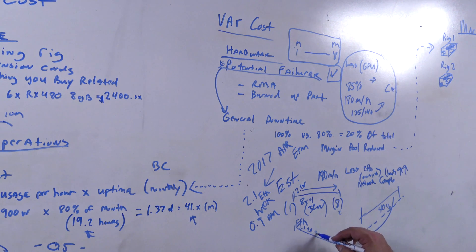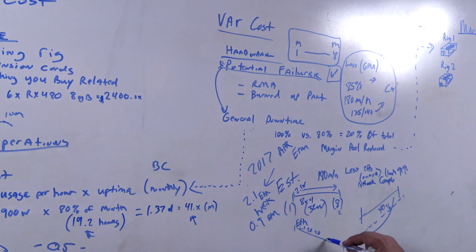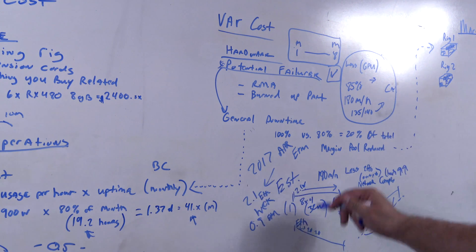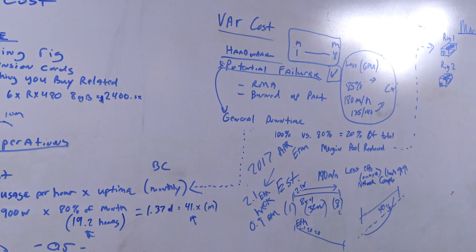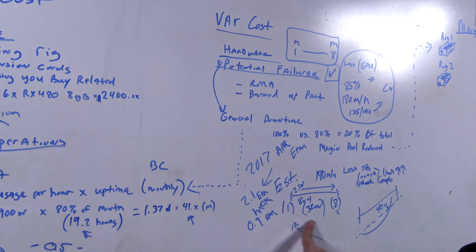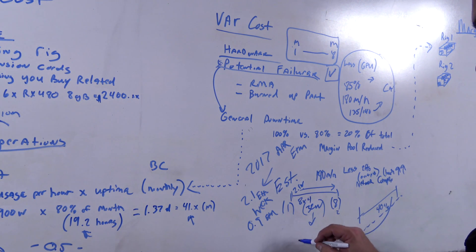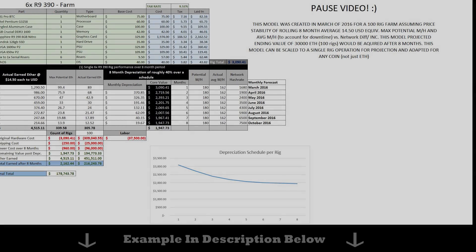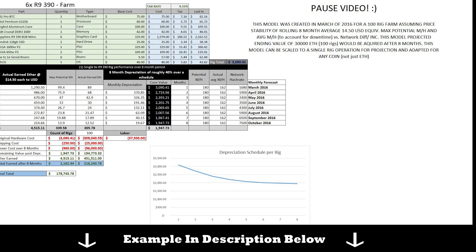So doing the math over 32 weeks total — with a descending model starting at 2.1 ETH per week, going to 2.0 and further down linearly — you sum up the total ETH you'll earn over those eight months. We'll bring up the model on screen to show what that looks like.